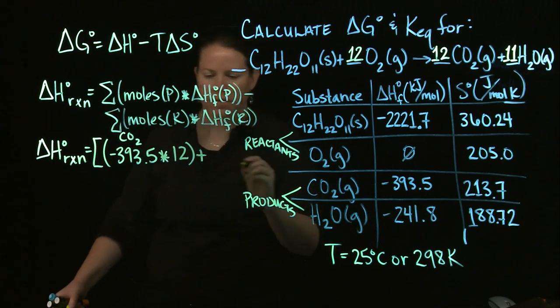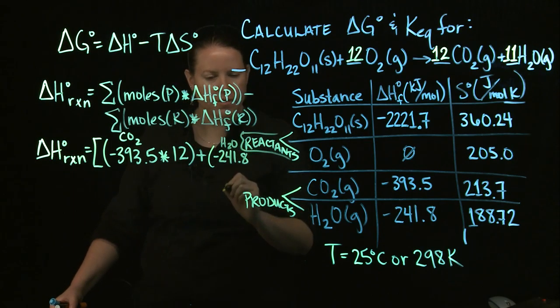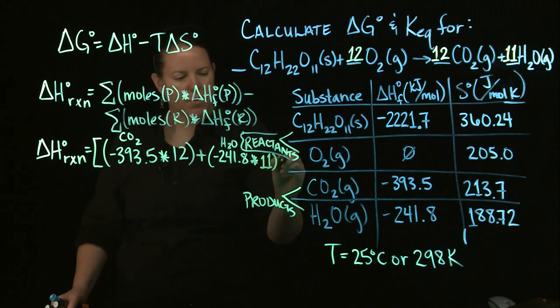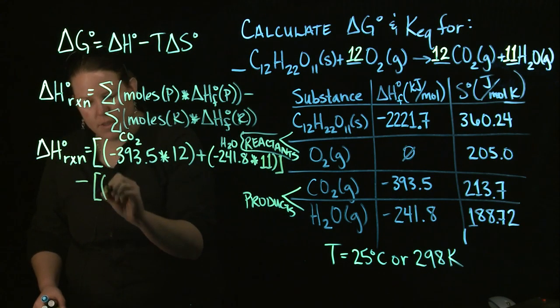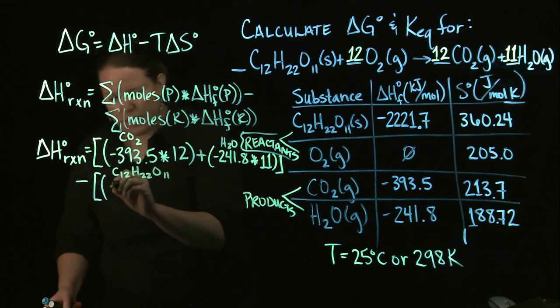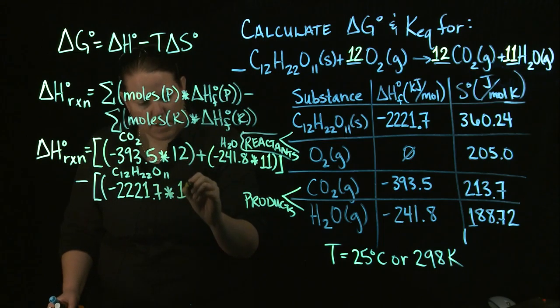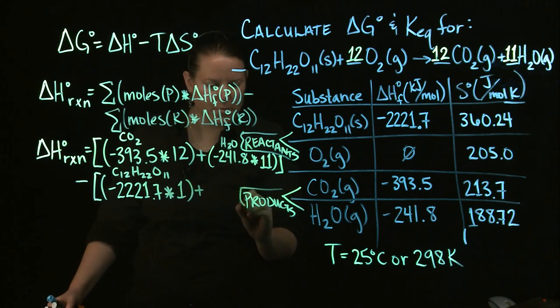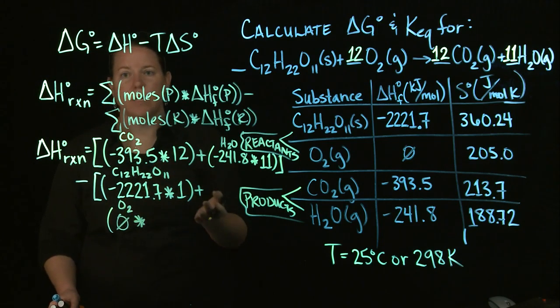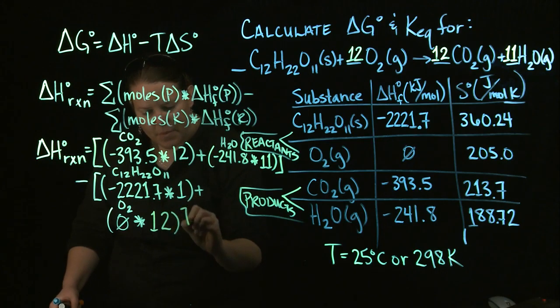I'm going to put negative 393.5 times its coefficient in the balanced chemical equation times 12 and then I'm going to add that to the other product which is negative 241.8. This is for water times 11 which is in the reaction. So the sum of the products. Now I'm going to subtract out the sum of the reactants. So I have C12, H22, O11. My value for delta H_f is negative 2,221.7 times 1 in that equation plus for O2.